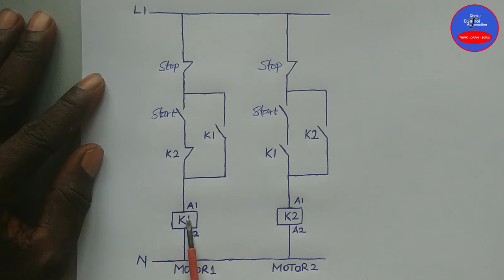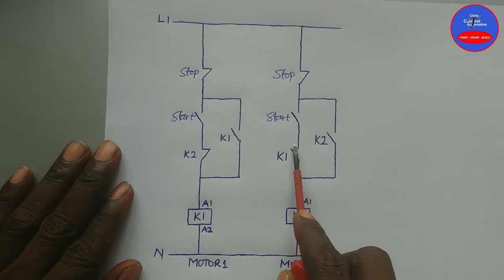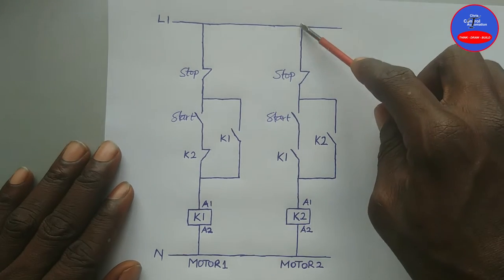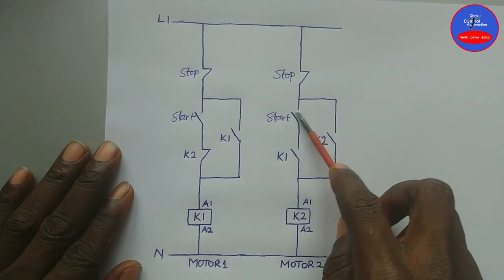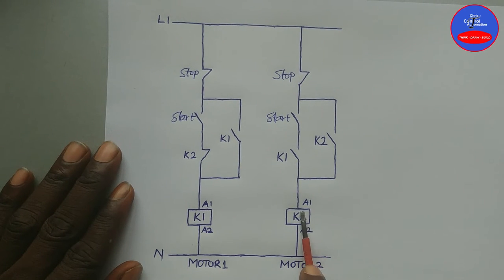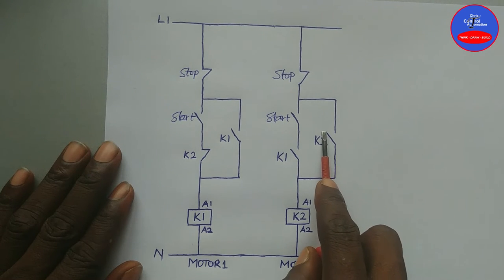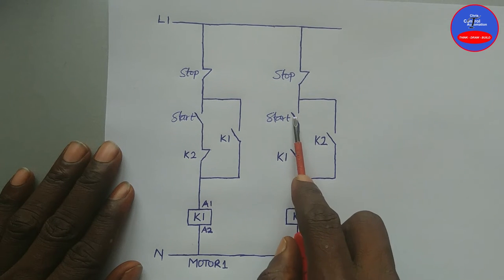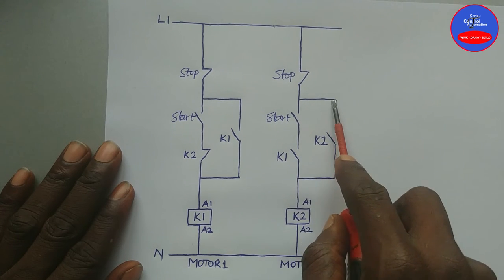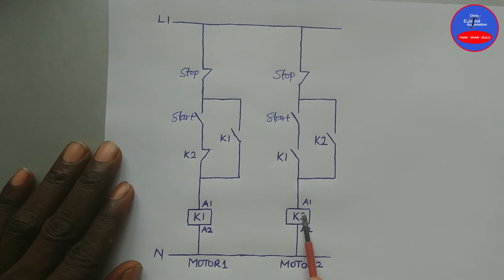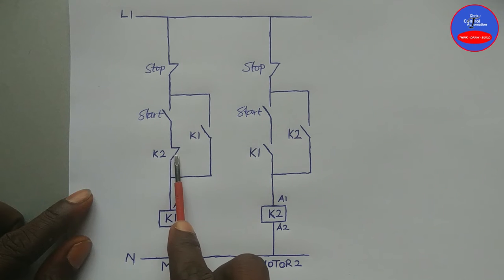As K1 is energized, this contact is closed. Therefore when you press on the start button, current can flow through this close contact, through this close contact, through this close contact, through this close contact on K1 to energize K2. The moment K2 energizes, this contact will close to provide a hold-on, so that when we remove our hand from the start button this contact will open, but current can still flow through this close contact on K2 to keep K2 in the energized state.